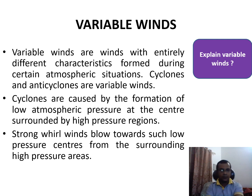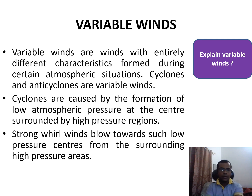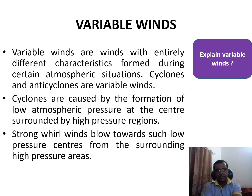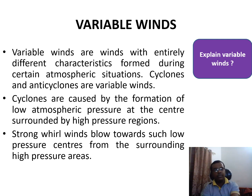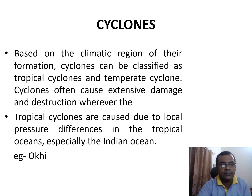Cyclones are caused by the formation of low atmospheric pressure at the center surrounded by high pressure regions. As a result, strong winds blow towards such low pressure centers from the surrounding high pressure areas. Based on the climatic region of their formation, cyclones can be classified as tropical cyclones and temperate cyclones. Cyclones often cause extensive damage and destruction wherever they go.